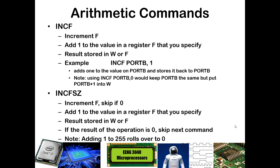You can increment values, which means just add 1 to the current value. Again, you can store that into the W register or into the register itself. So if you had INCF port B comma 1, then port B is now going to equal 1 more than what it was before. If you had INCF port B comma 0, then that would put the port B value plus 1 into W, but port B would maintain its same value.